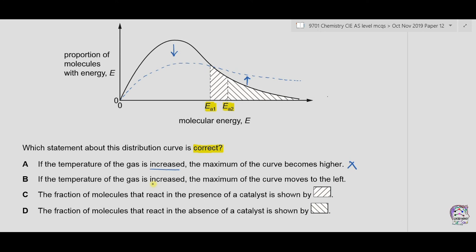Option B states that if temperature is increased, the maximum of the curve moves to the left — also incorrect. As shown, increasing temperature moves the curve to the right. Decreasing temperature would move the curve to the left with a higher hump. So B is also incorrect.